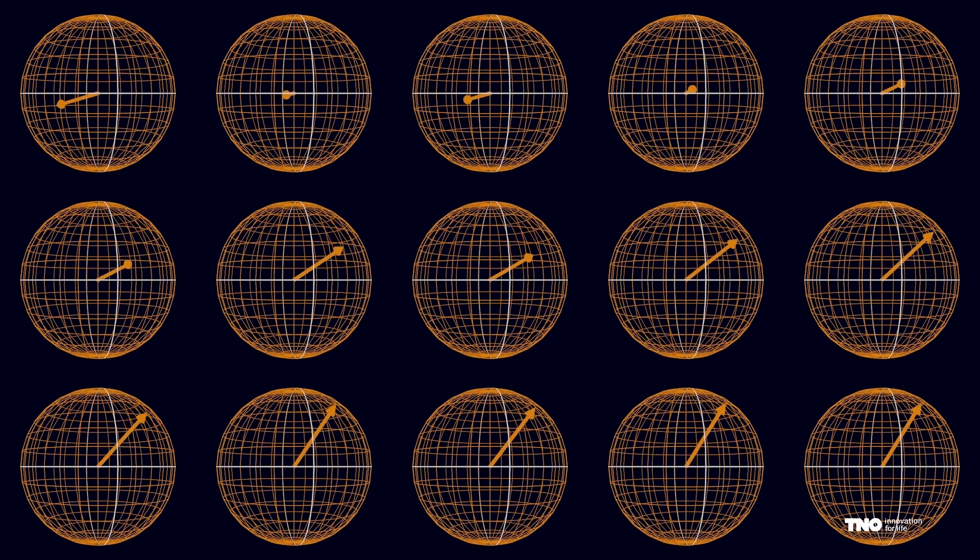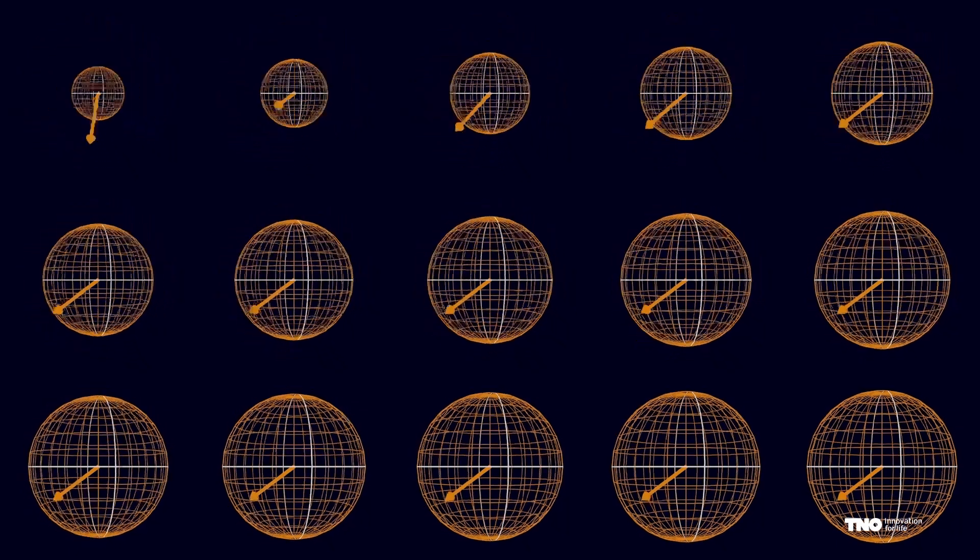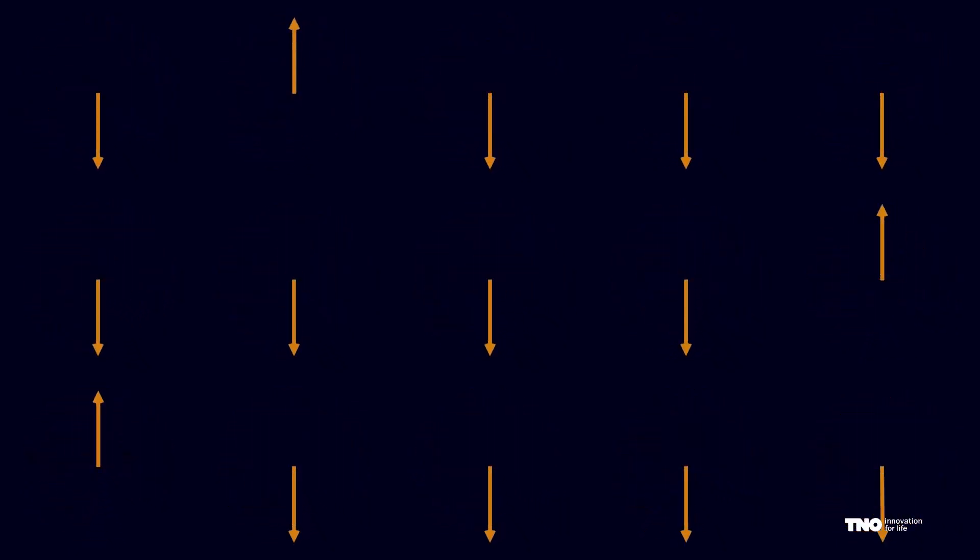So if we have a lot of qubits that are all in this state most of them will collapse pointing down but some will point up. But remember it's just the output that is binary again. During computation we can still make use of the whole sphere. So we now have an idea about the different information system resulting in a larger computational space.